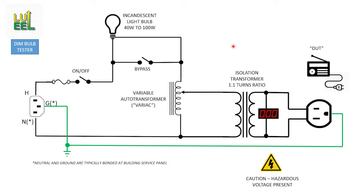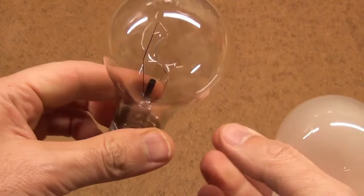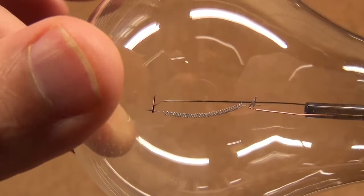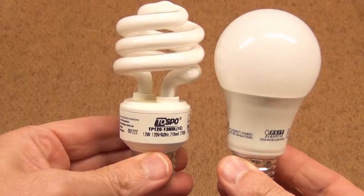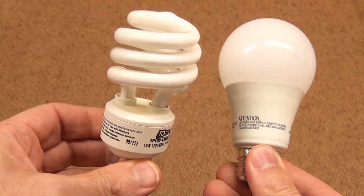First and most important it has to be an incandescent light bulb. And even better a clear glass bulb because you can see the filament better as it glows. Although frosted it will still work just fine.